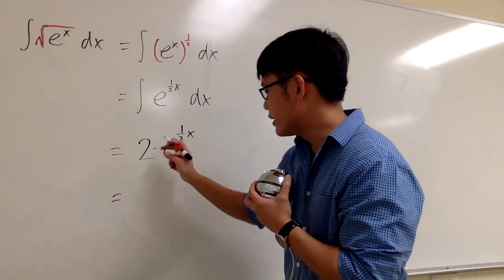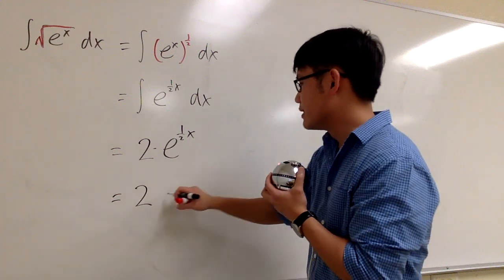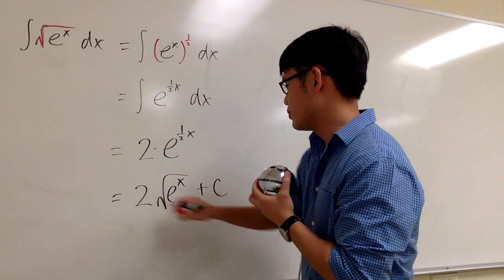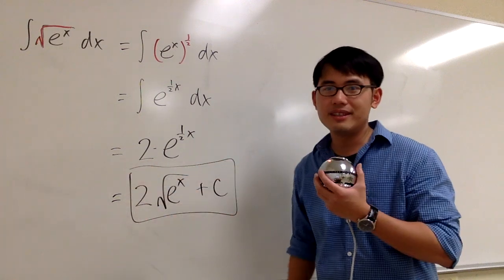So if you would like, you can write this back as 2. This is the same as square root of e to the x. And then we are done, so we'll put plus c. And this right here is it. Okay, thank you.